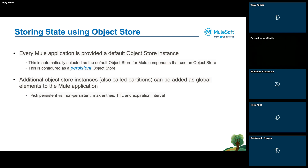In object store we have two different types: persistent and non-persistent. Depending upon the requirement we can choose either to store the state. If you choose non-persistent, which is in-memory, we generally use this for small data or to sync data which is not needed long-term, and data will be reloaded every time the server starts. In persistent object store, generally used for big data, data will survive even if a crash happens. The behavior of object store also changes depending upon the runtime — CloudHub 1.0 has different behavior than CloudHub 2.0.